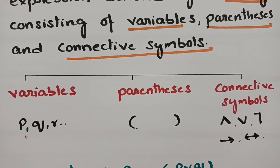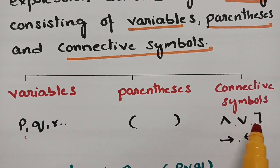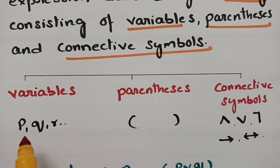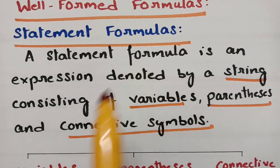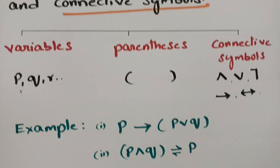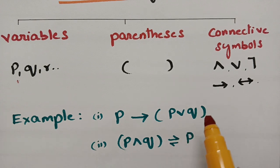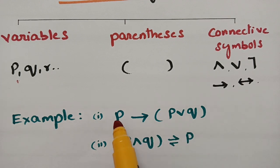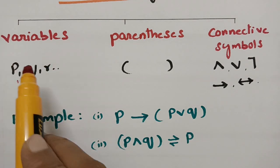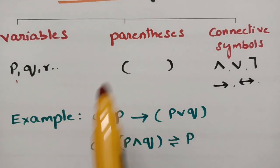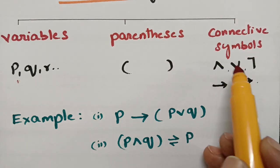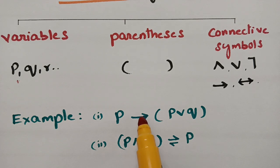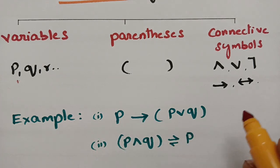For example, consider the expression P implies (P or Q). If you observe this string, P, Q are the variables — variables are existing. There are brackets — parenthesis exist. And all the variables are associated with connectives: here there is the implication symbol, here there is the OR symbol. So this is a statement formula.